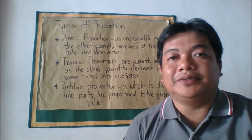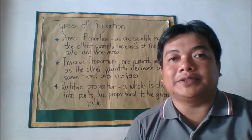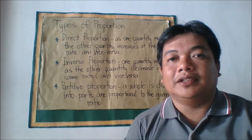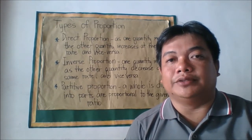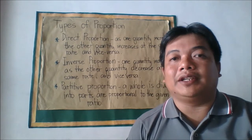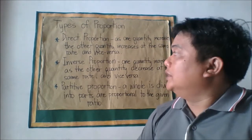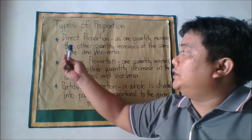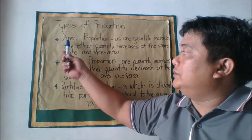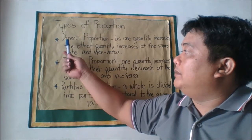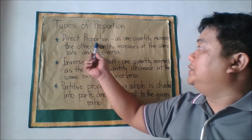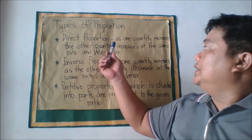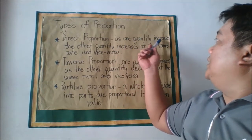Welcome back to our PLIF classroom. Today we are going to discuss the types of proportions. First, we'll discuss direct proportion: as one quantity increases, the other quantity increases at the same rate, and vice versa.